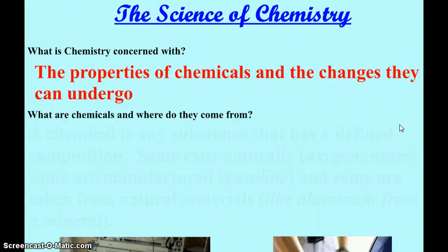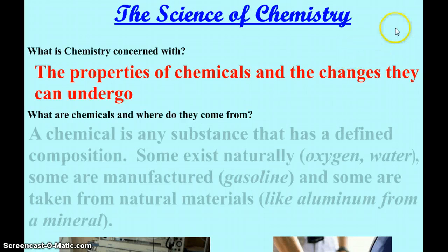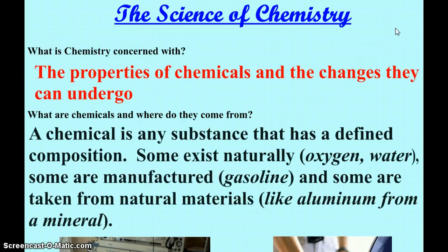Now what are chemicals and where do they come from? These are your notes so please write down what you need to write down in order to be a successful learner. A chemical is any substance that has a defined composition. Some of them exist naturally on our planet, the oxygen in the air, carbon dioxide in the air, nitrogen in the air, water in the lakes, rivers, streams and oceans and atmosphere. Some of them we have to manufacture like gasoline. We don't pull gasoline out of the ground. We pull crude oil and then we have to take it to a refinery and get gasoline and other kerosene and other petroleum products out of it.